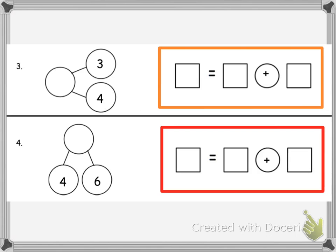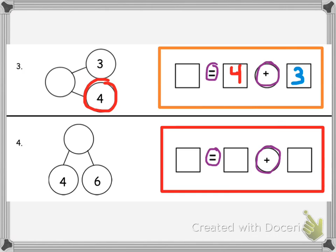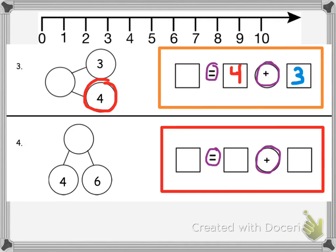Wait — I noticed something odd about these number sentences. The equal sign is in a different place than it normally is, and the plus sign is also on the other side. But that's okay — that's still a number sentence, and we're still going to follow the same steps to solve these. I circled the largest addend, which was 4. Then I put the other addend, 3. So I need to add 4 plus 3 — I start with 4 and count 3 over: 4, 5, 6, 7. That gives me the sum of 7.